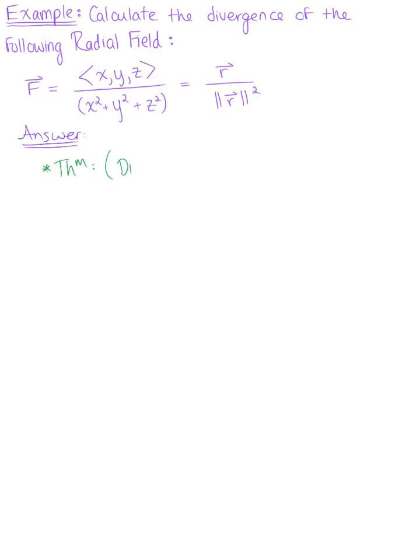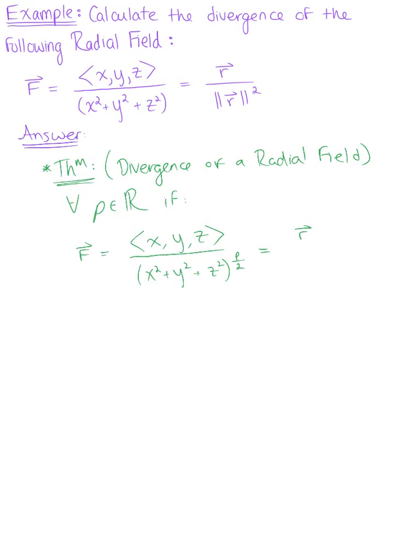This is called the divergence of a radial field. And so this theorem tells us that for all P, or for all real numbers P, if you have a radial vector field of the form vector F defined by the vector XYZ all over X squared plus Y squared plus Z squared raised to the P divided by 2, which we can also think about as the position vector R over the magnitude or length of that position vector raised to the P power.